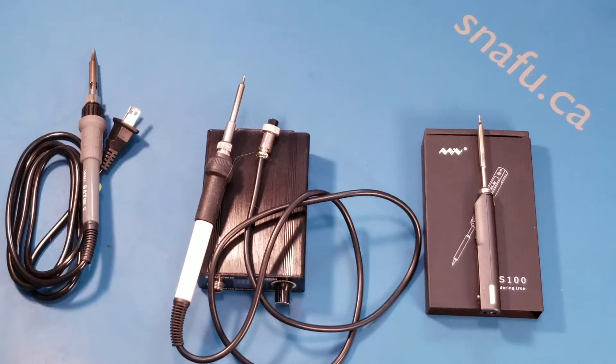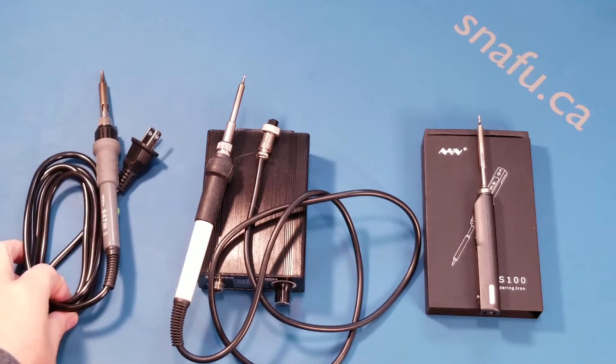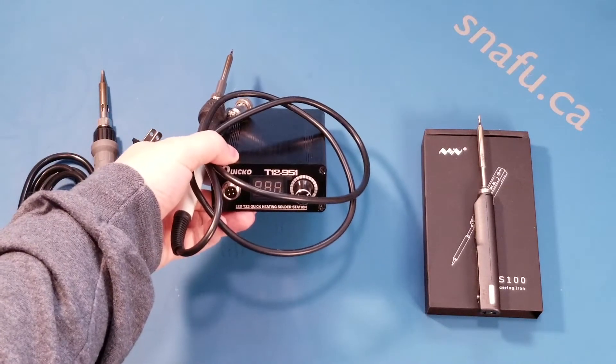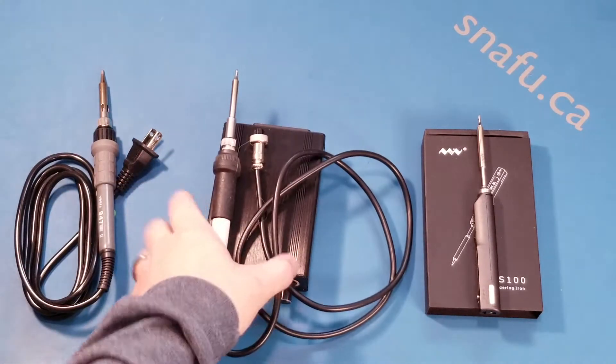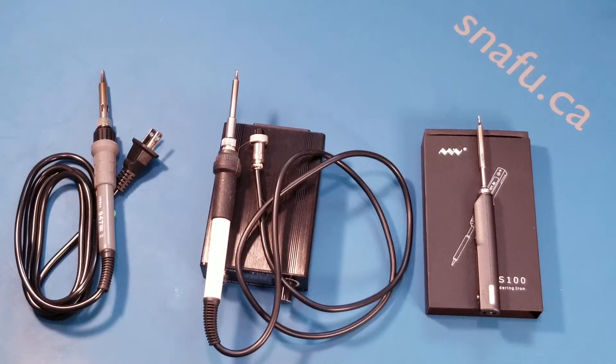Hi, it's the Boffin. Today we're going to have a look at three inexpensive soldering irons. We have the Yiwa 947-2 at just $13, the $43 Quikko T12951, and the very popular TS100. Let's have a closer look at each.